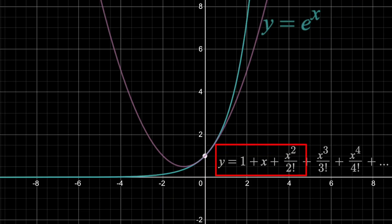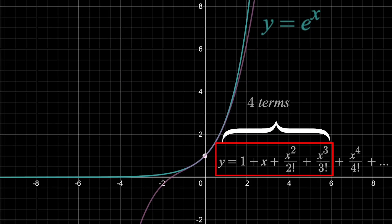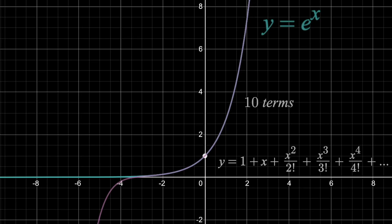With e to the x, for example, as you include more and more terms in your series, the approximation gets closer and closer to e to the x. And as you go out to infinitely many terms, then you get a perfect approximation.